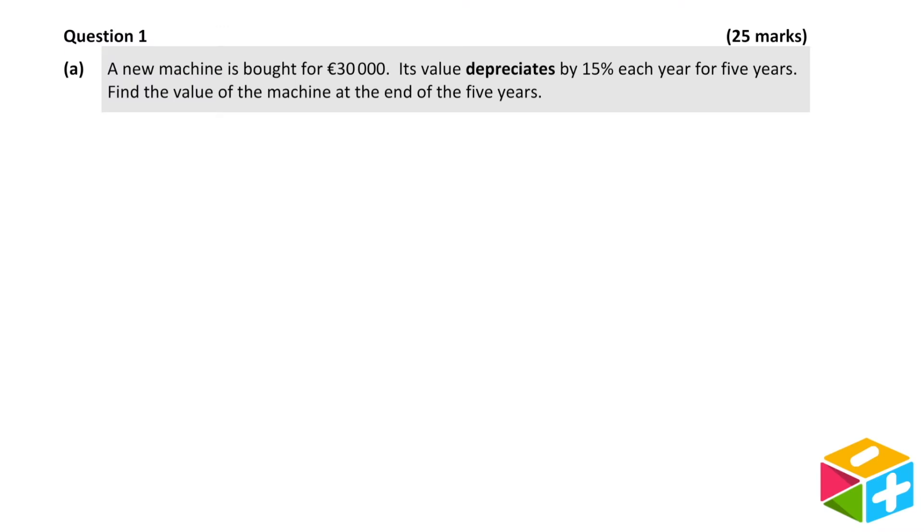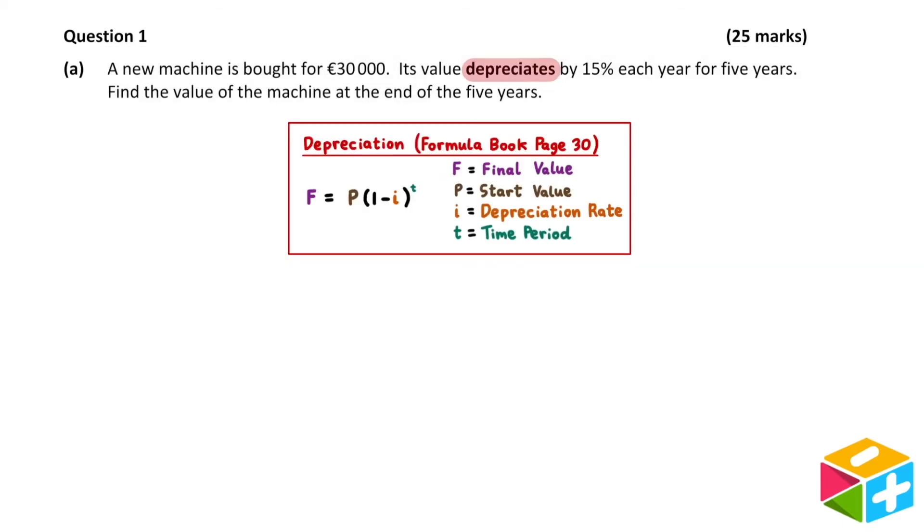A new machine is bought for €30,000. Its value depreciates by 15% each year for 5 years. Find the value of the machine at the end of the 5 years. Since this question involves depreciation, the first step is to open up our formula book to page 30 and look at the formula for depreciation.